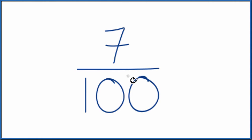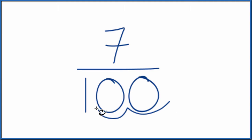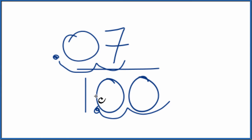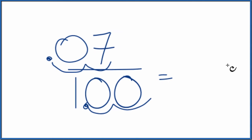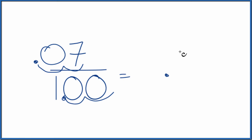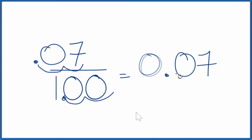I was asked to convert the fraction 7 over 100 to a decimal, so I'll show you two ways to do this. The first way: because we have 100, we can just move the decimal point two places. We need to put a zero as a placeholder, giving us 0.07. Seven over 100 as a decimal is 0.07.